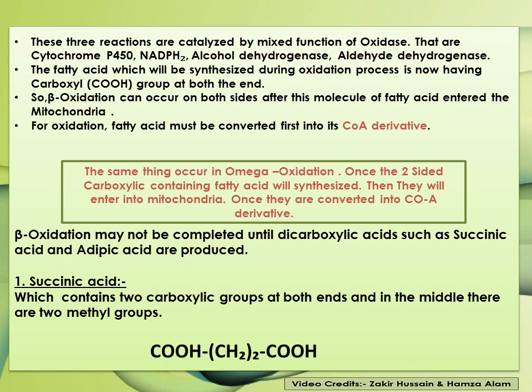The fatty acid synthesized during this oxidation process now has a carboxylic group on both ends. This means beta oxidation can occur on both sides after this molecule enters the mitochondria. Keep in mind, as discussed in previous lectures, the fatty acid must first be converted into its CoA derivative. The same applies in omega oxidation — once the two-sided carboxylic-containing fatty acids are synthesized, they enter the mitochondria as CoA derivatives.